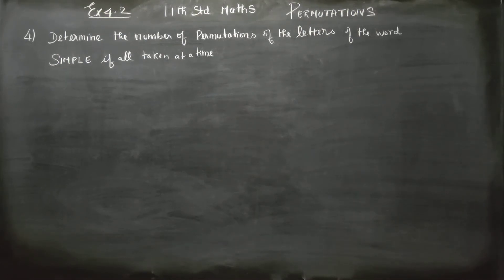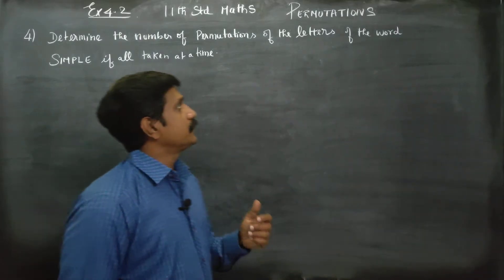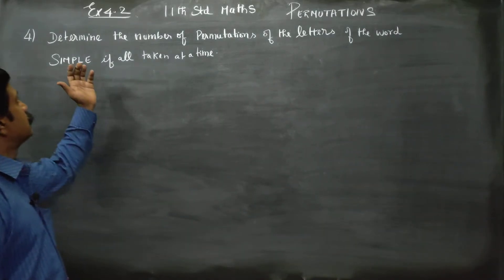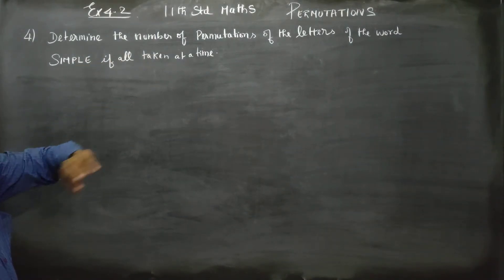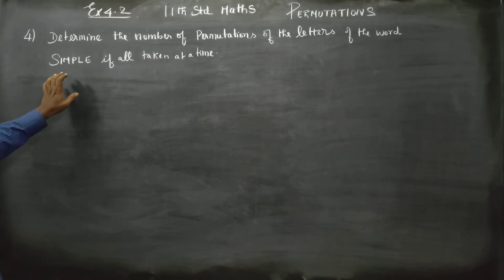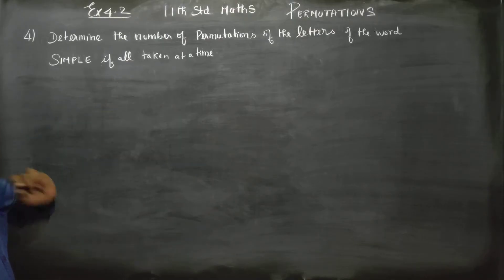Hello 11th standard students. In exercise 4.2, sum number 4: determine the number of permutations of the letters of the word SIMPLE if all are taken at a time.